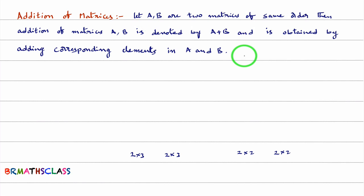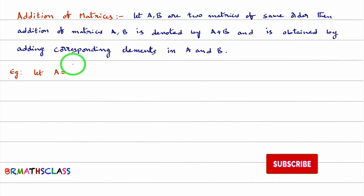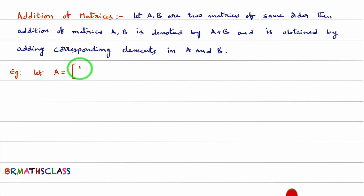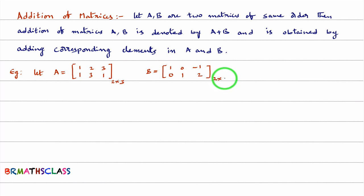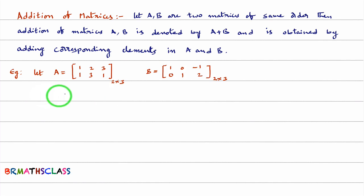We'll try to understand this with an example. Let A be a matrix of order 2 by 3. You know that addition of matrices is defined only when they are of same order. So, I'll consider matrix B which is also of order 2 by 3. As the matrices are of same order, then addition of matrices is defined. Addition of two matrices A and B is denoted by A plus B.